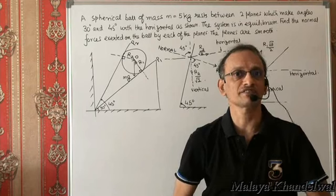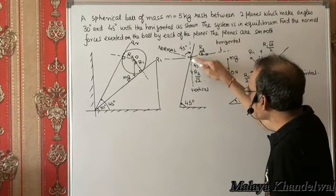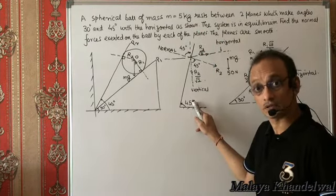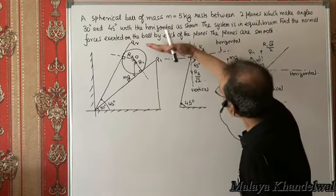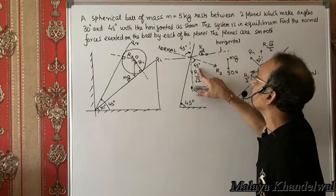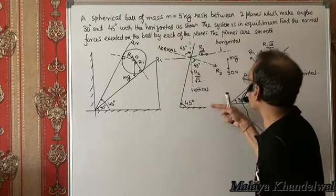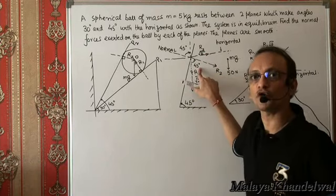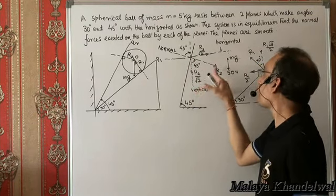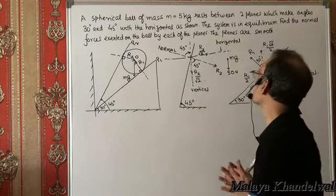Let me draw the planes separately for clarity. This is plane P2, which makes an angle of 45 degrees with the horizontal. This line is the normal to that plane, and it makes an angle of 45 degrees with the vertical — a normal to a plane makes an angle equal to the plane's angle with the horizontal. I can resolve R2 into its vertical component, R2 cos 45° = R2 / √2, and its horizontal component, R2 sin 45° = R2 / √2.